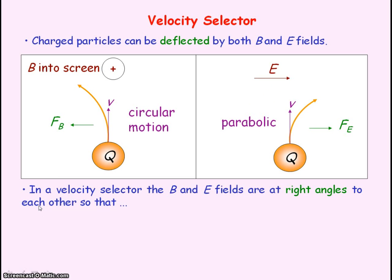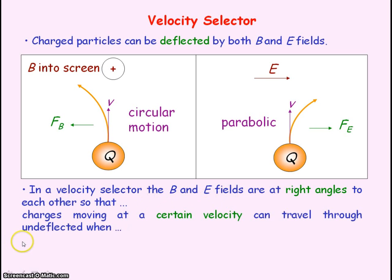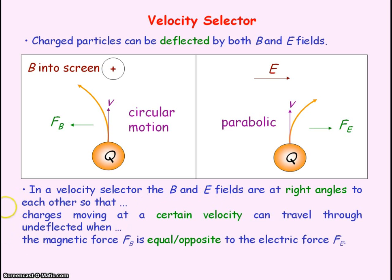A velocity selector consists of uniform magnetic and electric fields which are at right angles to each other, such that only charges moving at a certain velocity can travel through both fields undeflected. And that is when the magnetic force will be equal and opposite to the electric force.